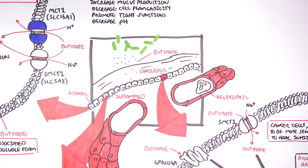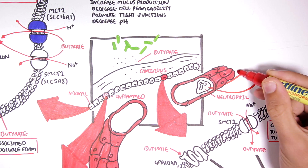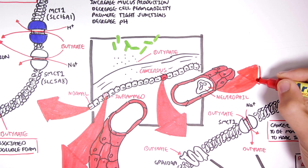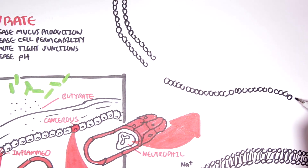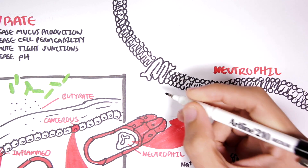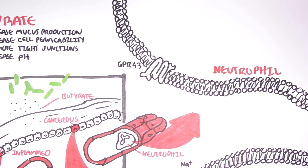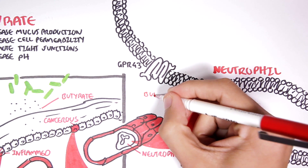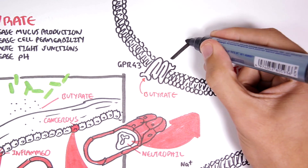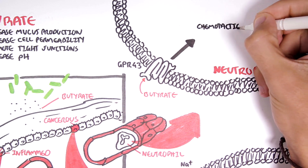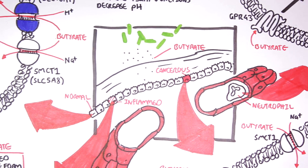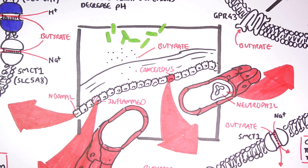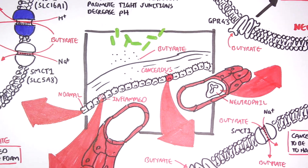Butyrate can affect the immune system in many ways, but here we concentrate on its effects on neutrophils. Butyrate can act on G protein receptors 43 and 41 on immune cells. By activating G protein receptor 43, butyrate has shown to have chemotactic properties, allowing more neutrophils to be recruited to the area of interest. By recruiting more immune cells, the neutrophils are able to remove unwanted substances or bacteria from the mucosal system.